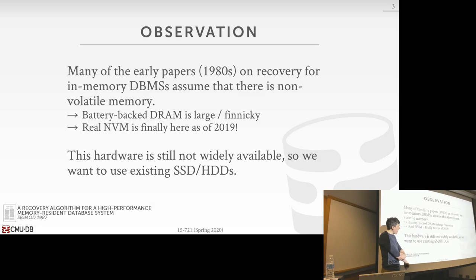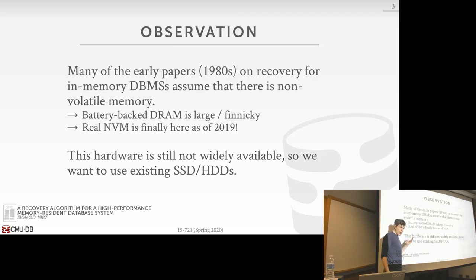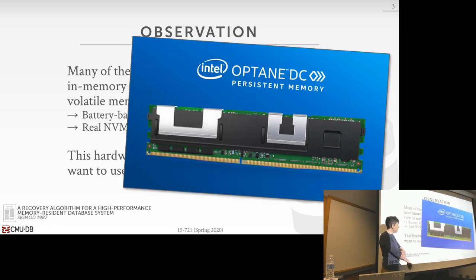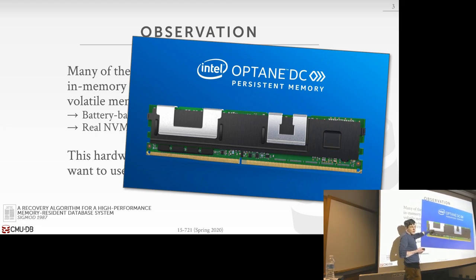You don't see battery-backed DRAM in the wild — you certainly can't get an AWS instance with it. The other kind of persistent memory is true non-volatile memory. For years I would say it was coming out one year from now, and finally Intel released true non-volatile memory called Optane. It goes into a DIMM slot like DRAM but retains everything on power loss — slightly slower than DRAM but much faster than SSDs.